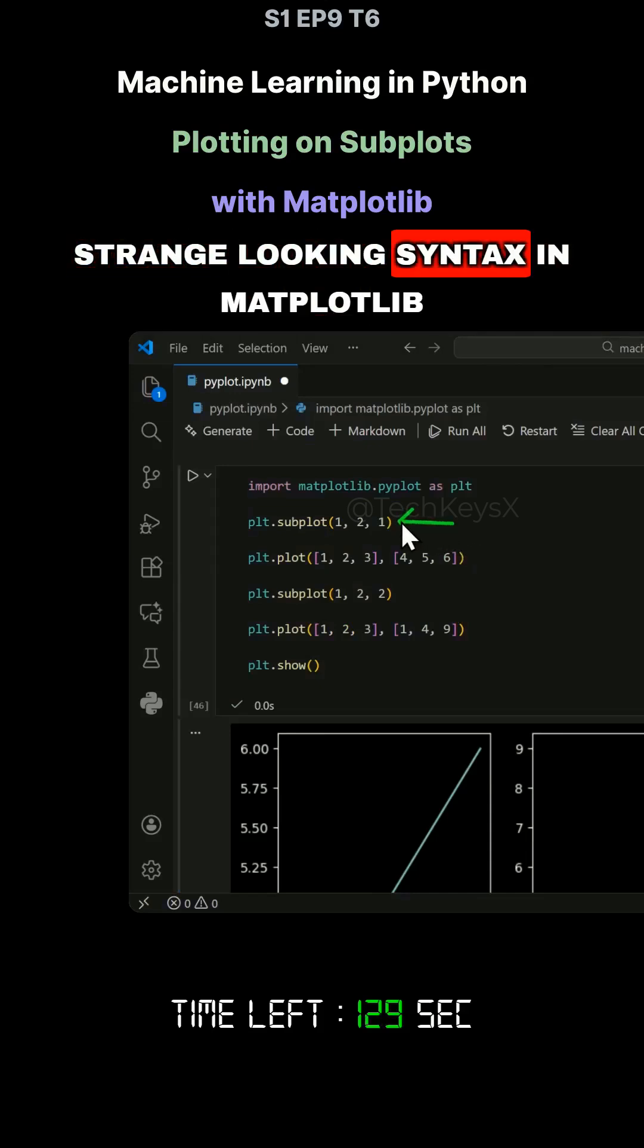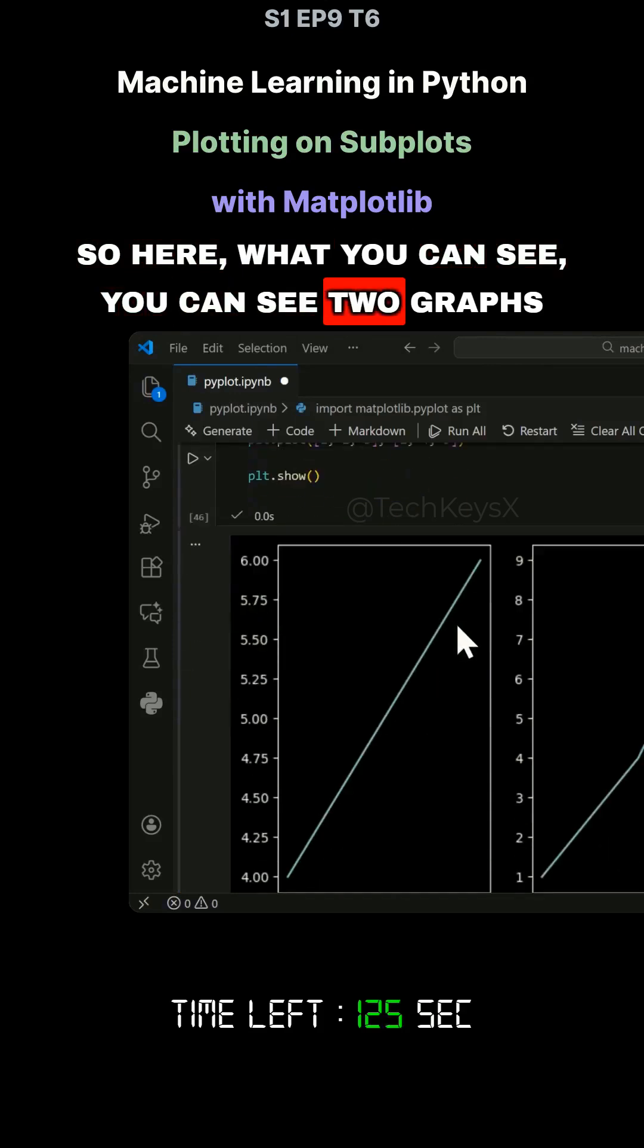Let's have a look at this very strange looking syntax in Matplotlib and what they actually do. So here, what you can see, you can see two graphs.